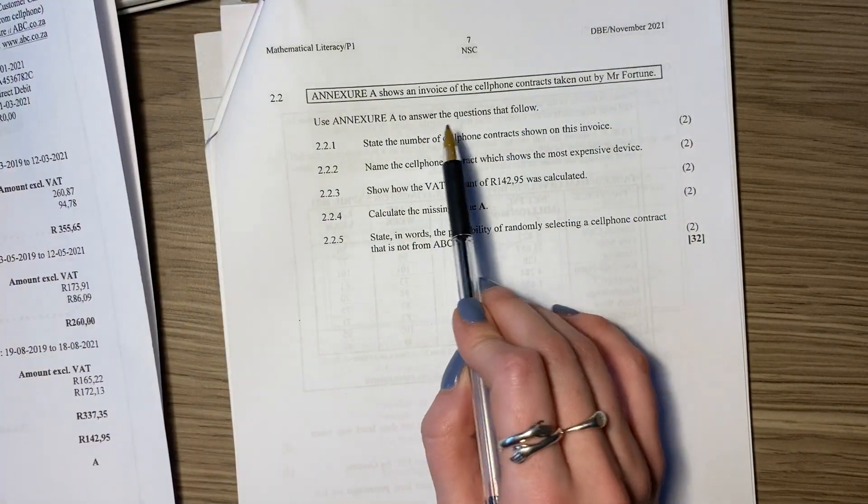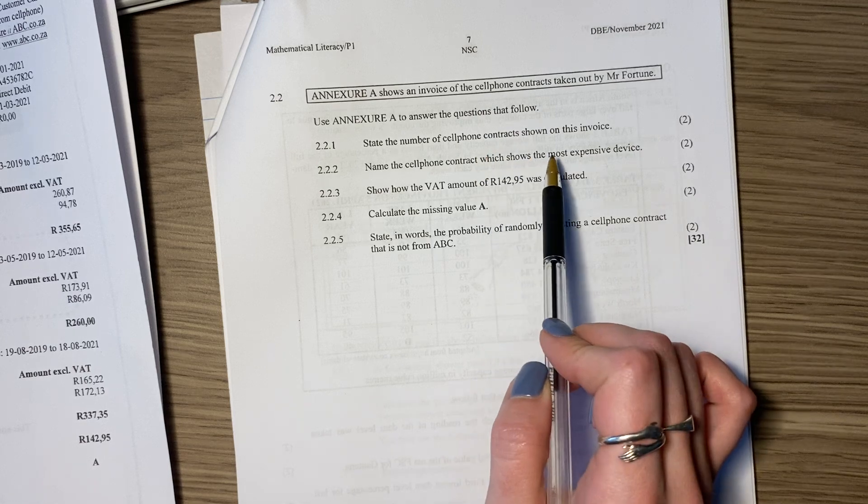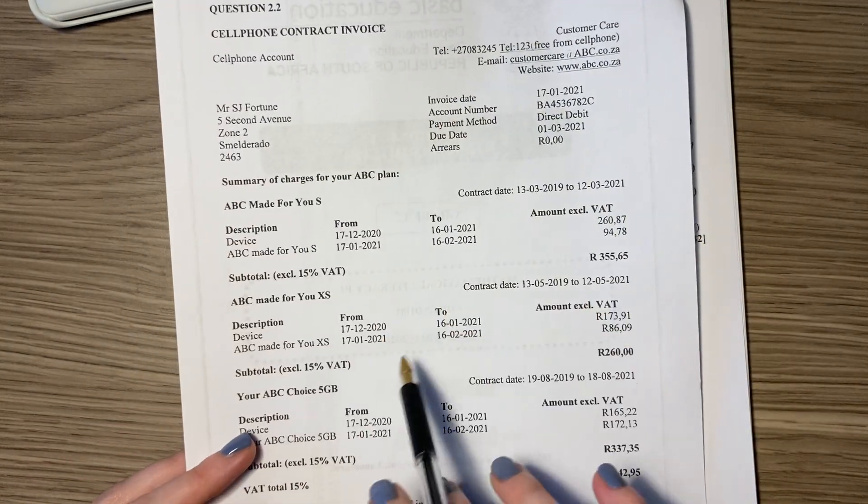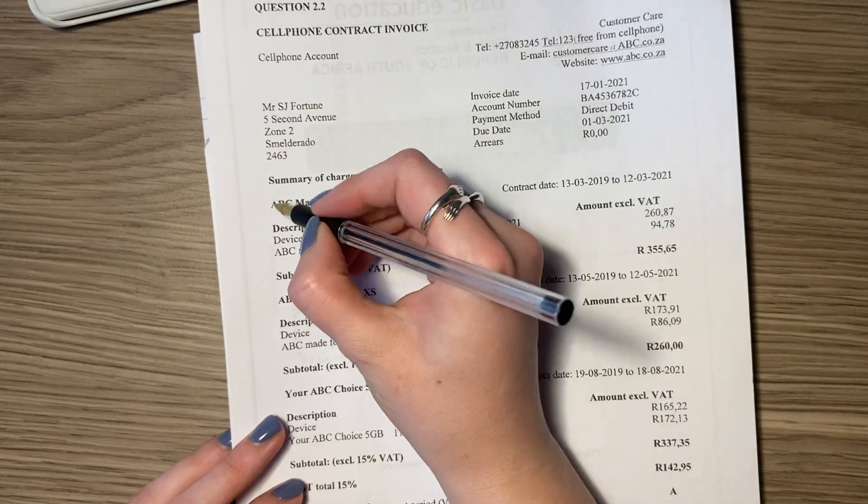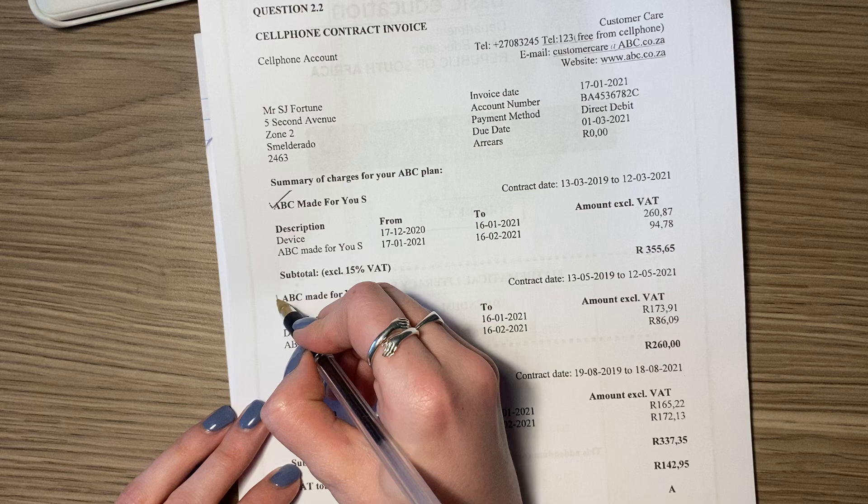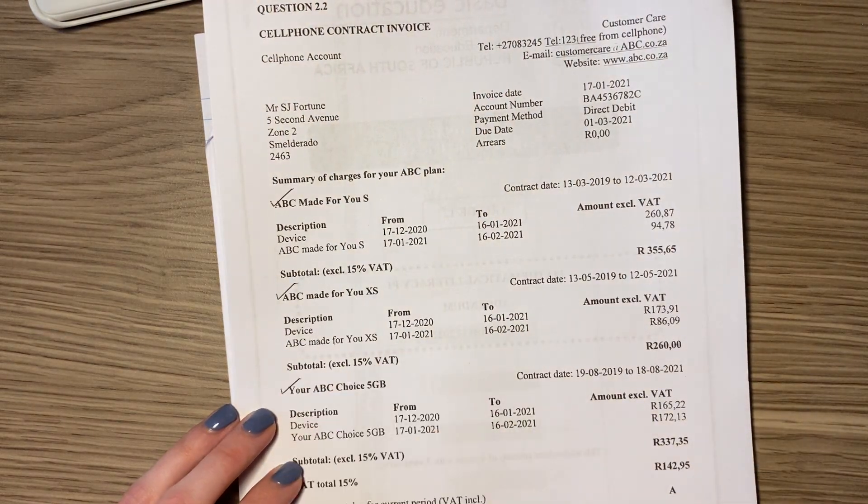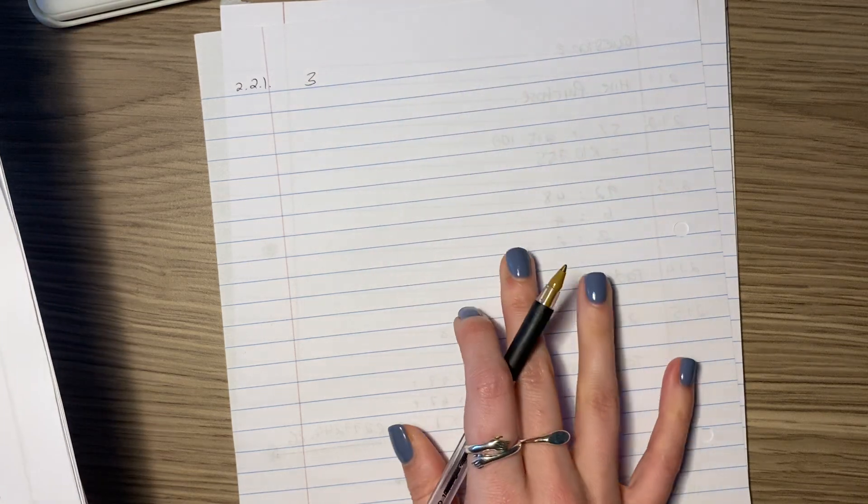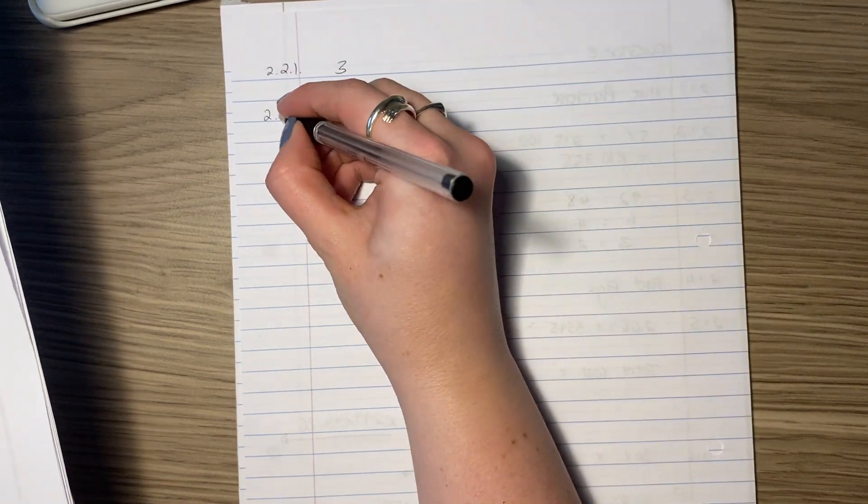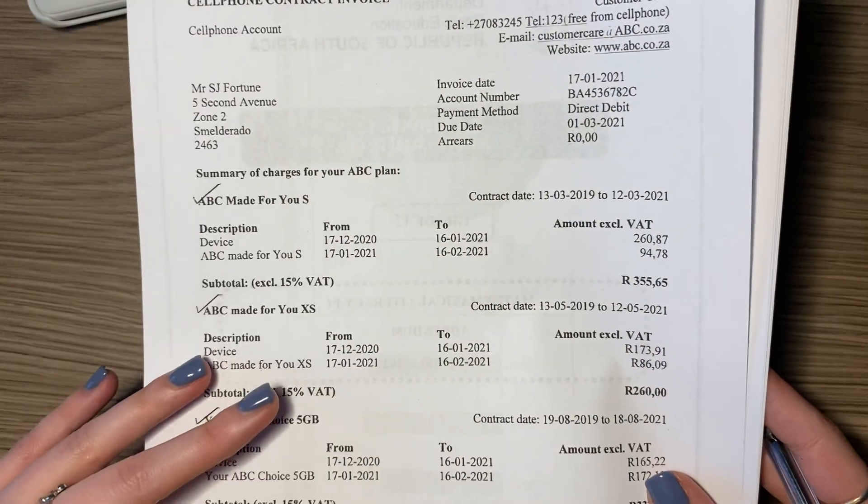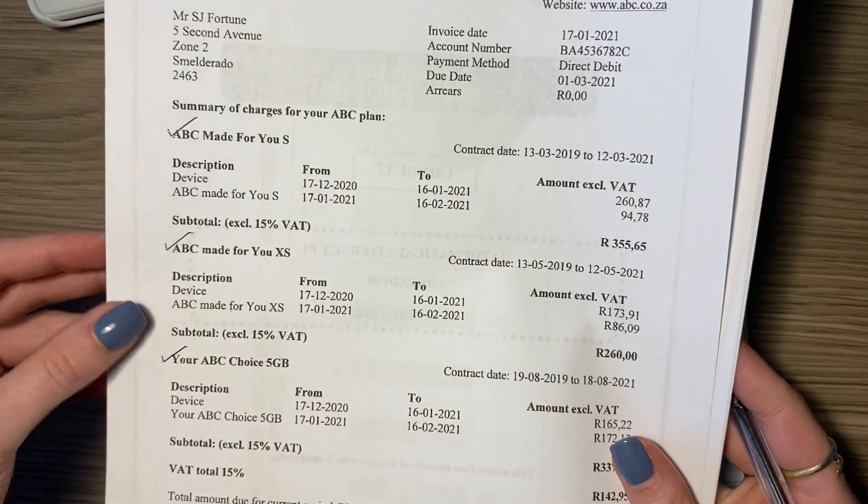It says state the number of cell phone contracts shown on this invoice. Let's have a look. Here's an invoice. There's one contract, two contracts, three contracts. So how many contracts are there? There are three. These questions students often don't like because they find it difficult to interpret, but just take a little bit of time and look at it. It gives you all the information.